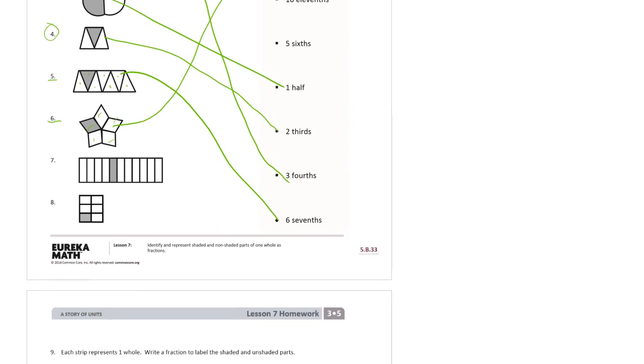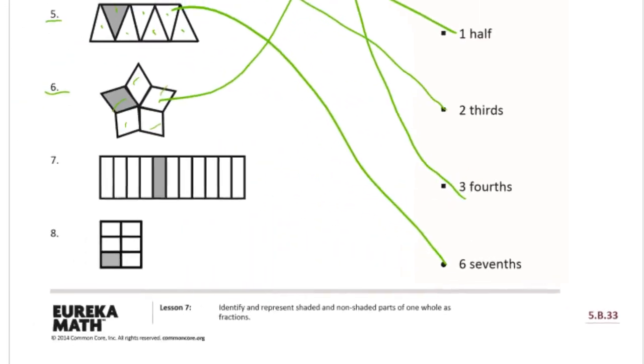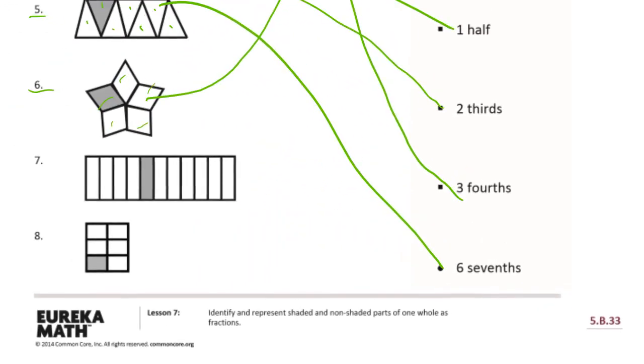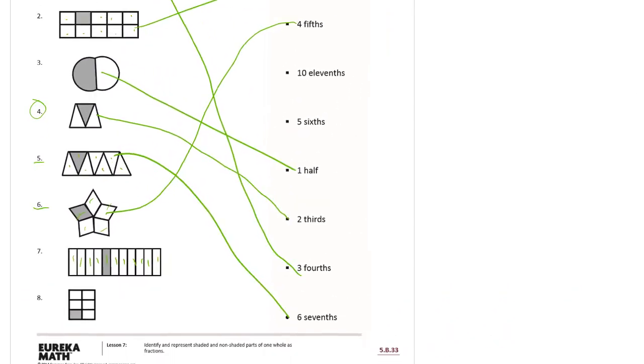I've got to zoom in for this next one so we can count all the pieces. We could probably guess it by looking at what's left. Look at this. There's 1, 2, 3, 4, 5, 6, 7, 8, 9, 10, 11. 1 eleventh is shaded in, so that means 10 elevenths are not shaded in. Here's the 10 elevenths way up here.